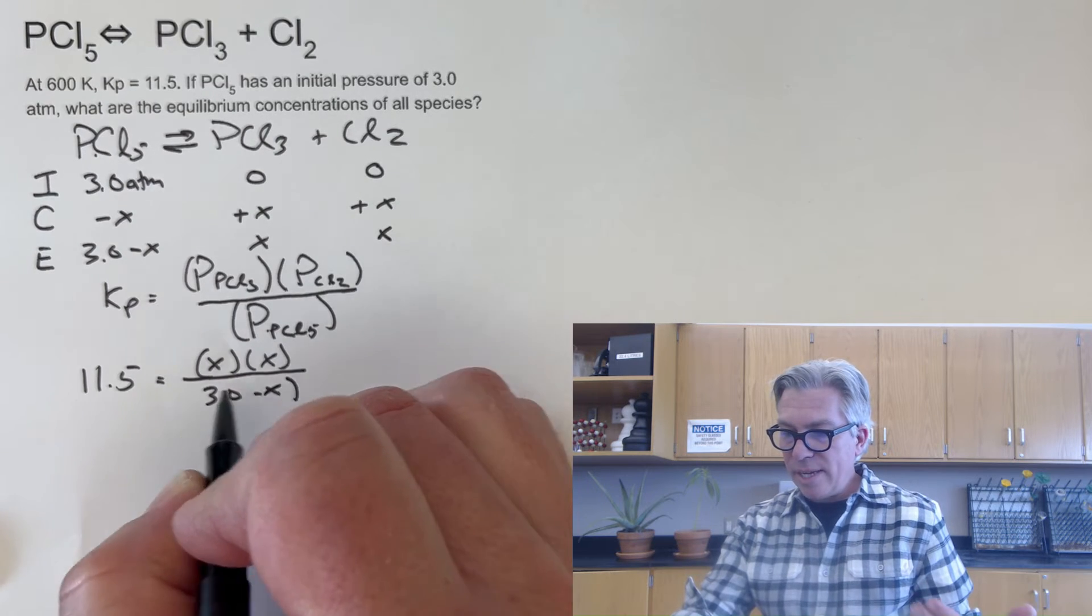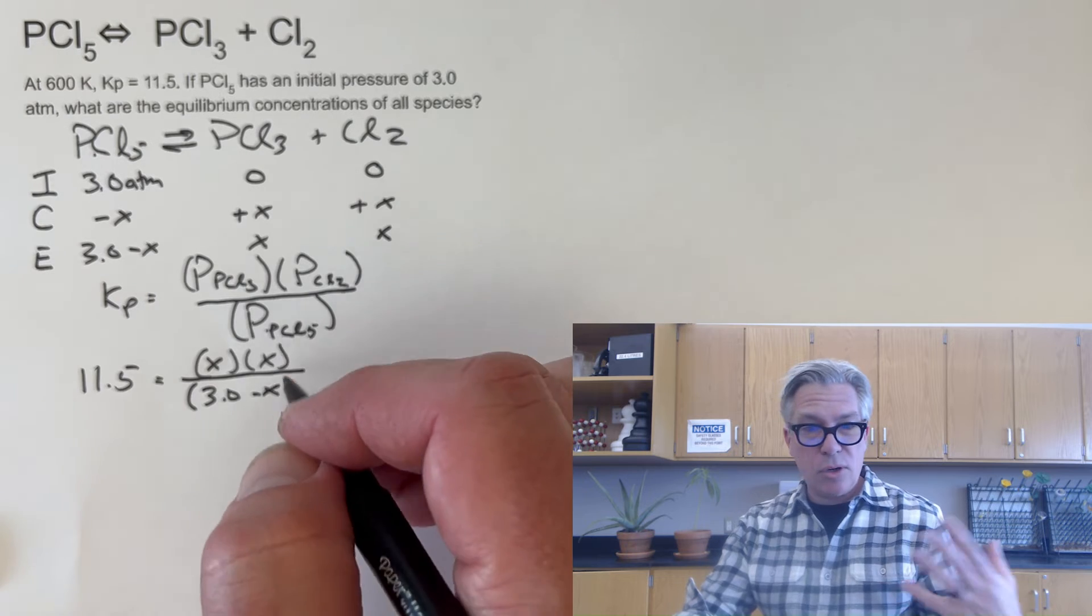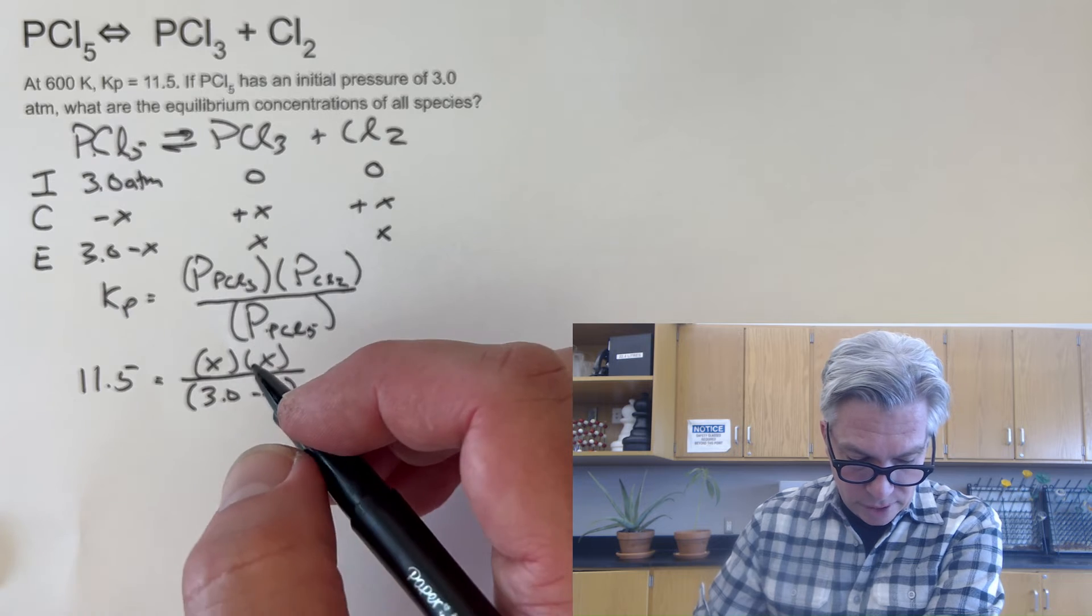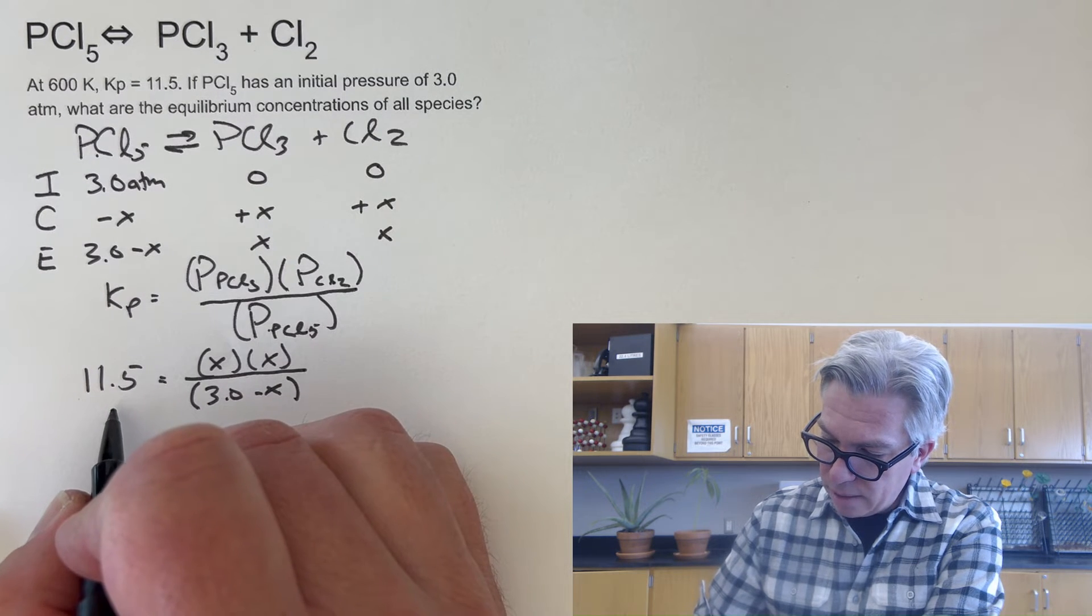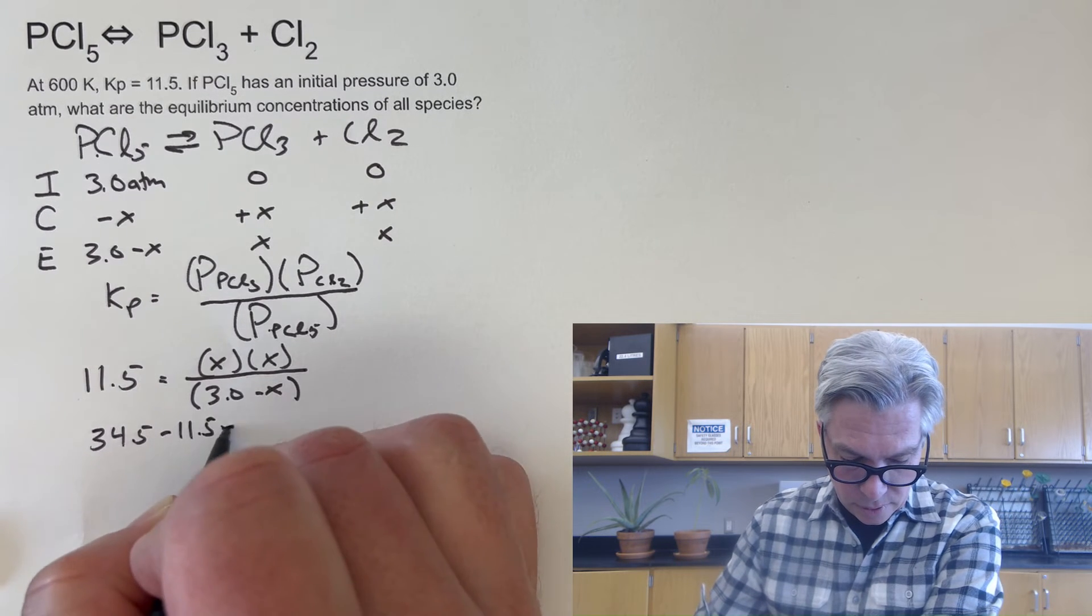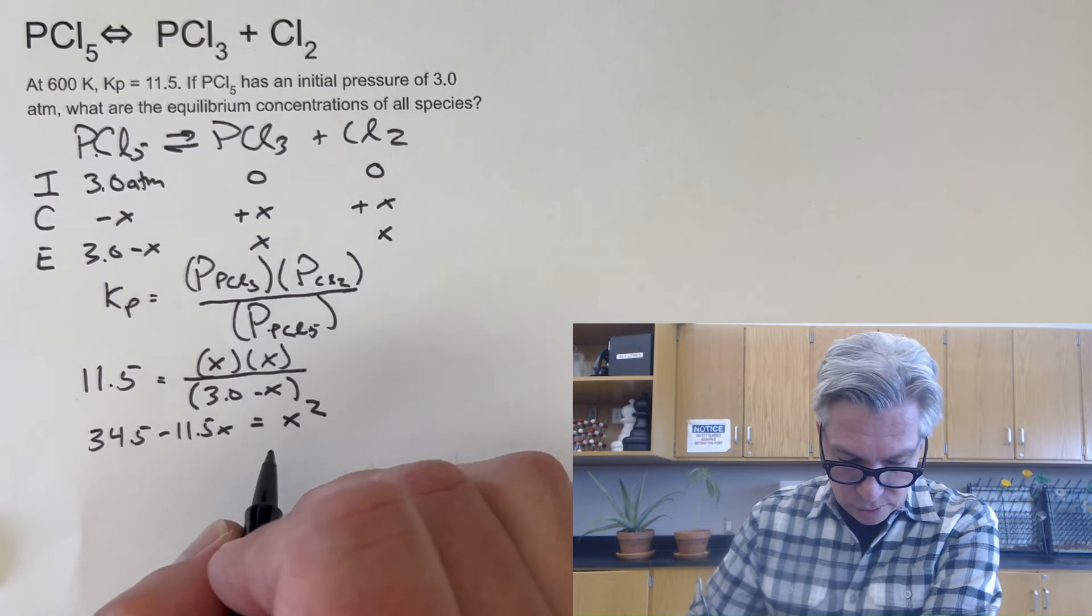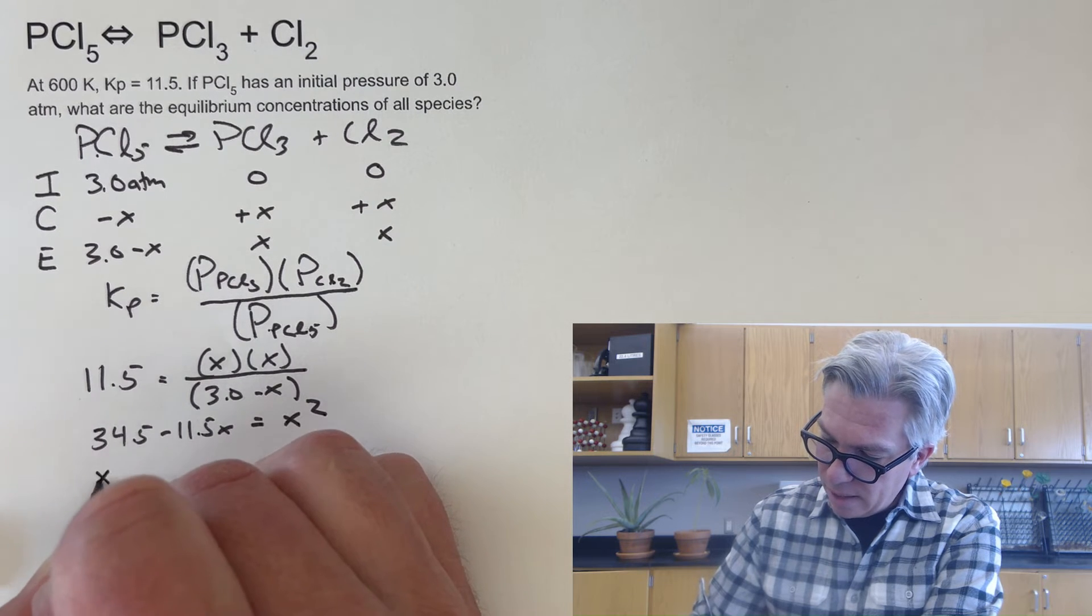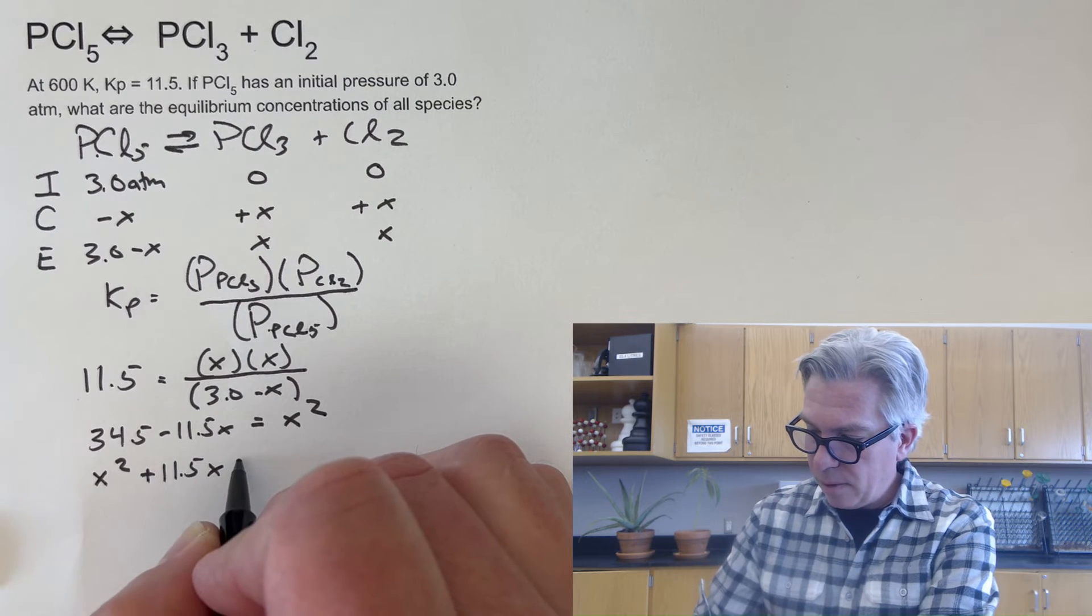Now I'm going to try to simplify this. Now I can't do the square root of the top and bottom and both sides like I did last time. So I got to do something slightly different. Now I'm going to move this over to the one side and distribute it. So I get 34.5 minus 11.5X, and that's going to be equal to X squared. I'm going to move these now over to the other side so we can set the whole thing equal to zero. X squared plus 11.5X minus 34.5, and that's going to be equal to zero. So we actually have a quadratic equation here in this example.